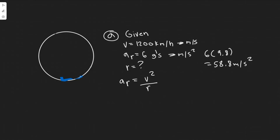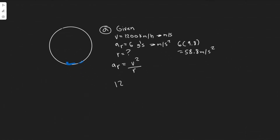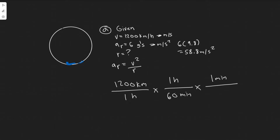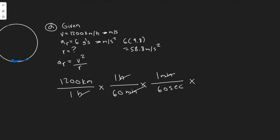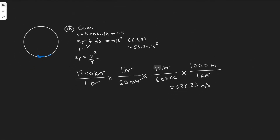Now we convert the velocity. Starting with 1200 kilometers per hour, we multiply by 1 hour over 60 minutes, then 1 minute over 60 seconds, giving kilometers per second. Then multiplying by 1000 meters per kilometer gives meters per second. So 1200 divided by 60 divided by 60 times 1000 equals 333.33 meters per second.